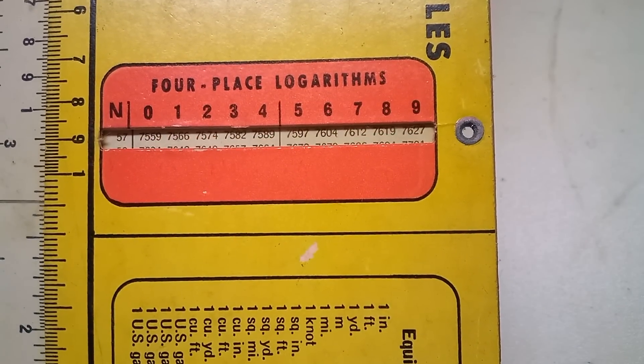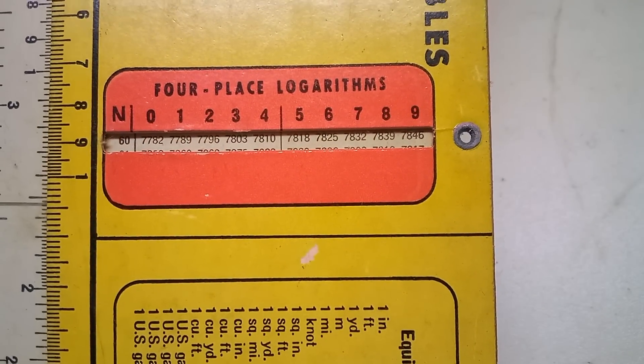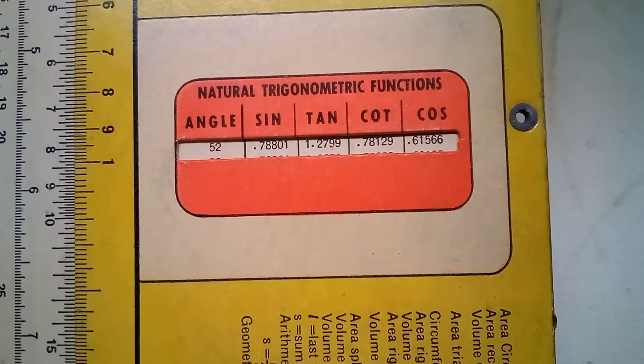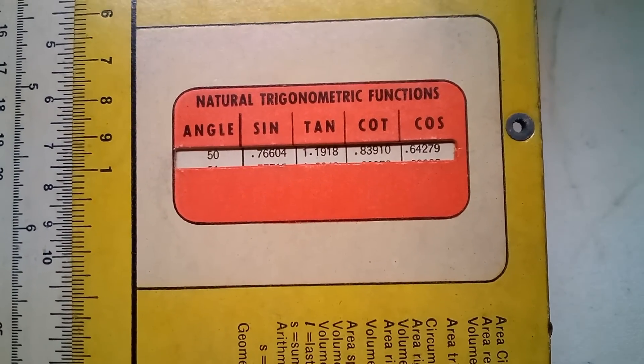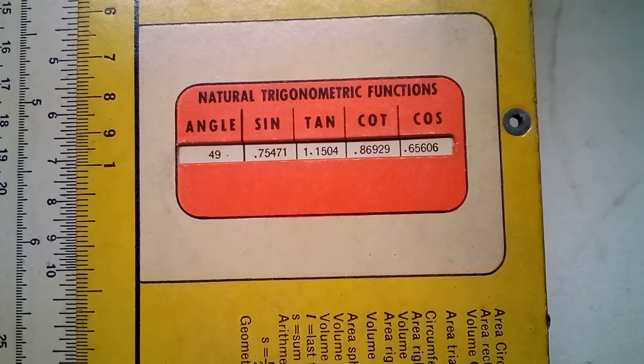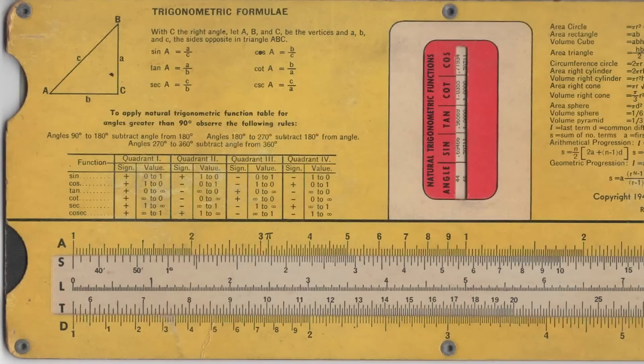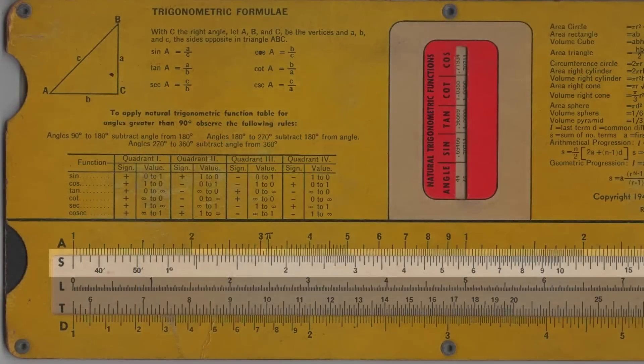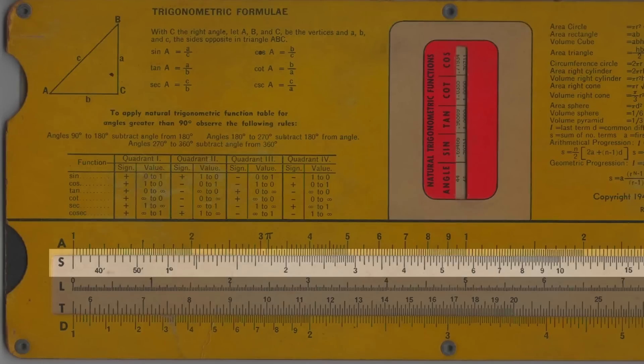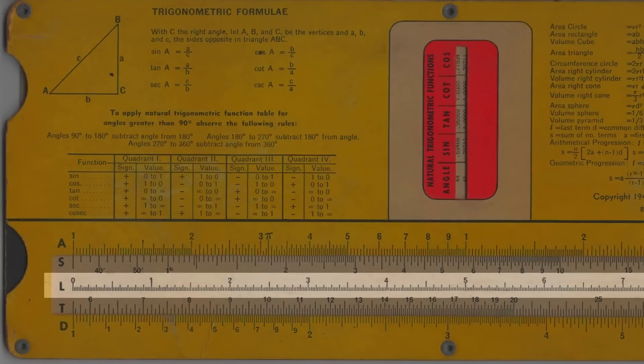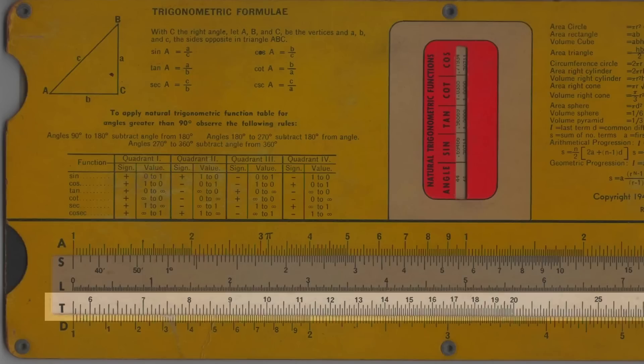And there's even more stuff on the back. Here we have a trigonometric table—yeah, I'm starting to get triggered by all this math stuff. And then another set of five scales: the S scale is for calculating sines, L is for log 10, and T is for tangent.